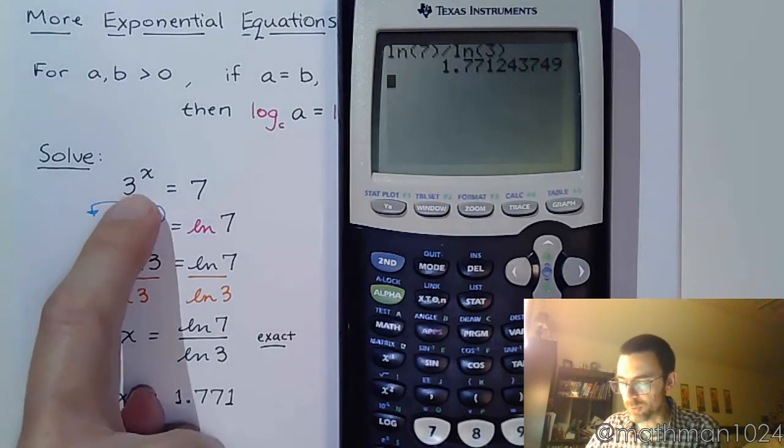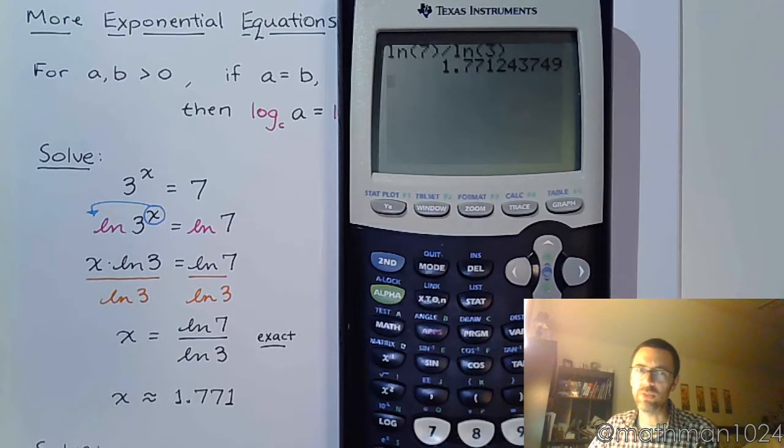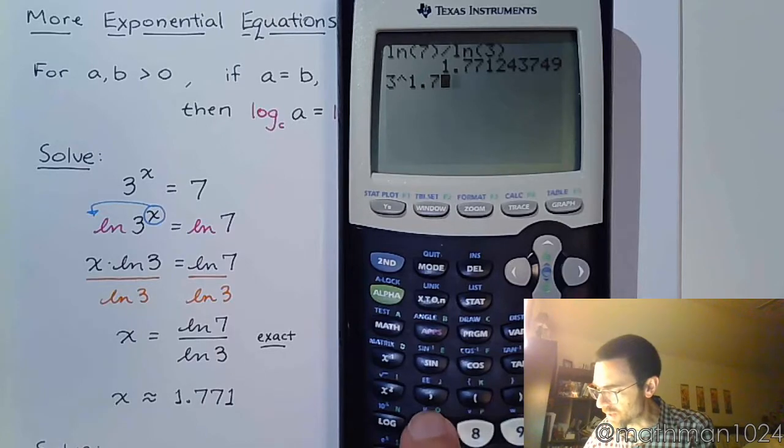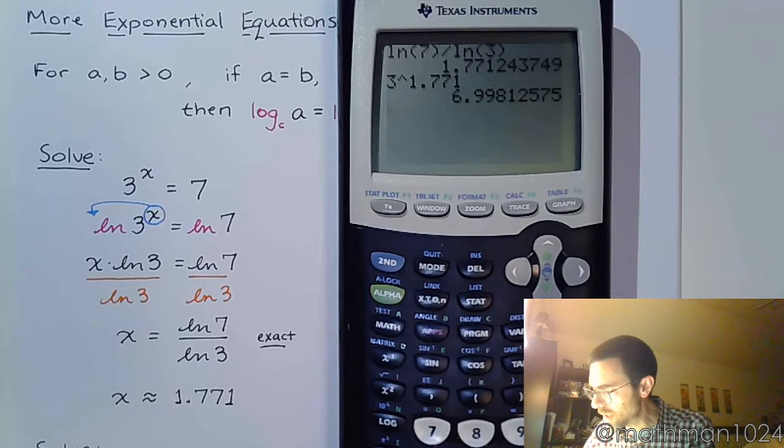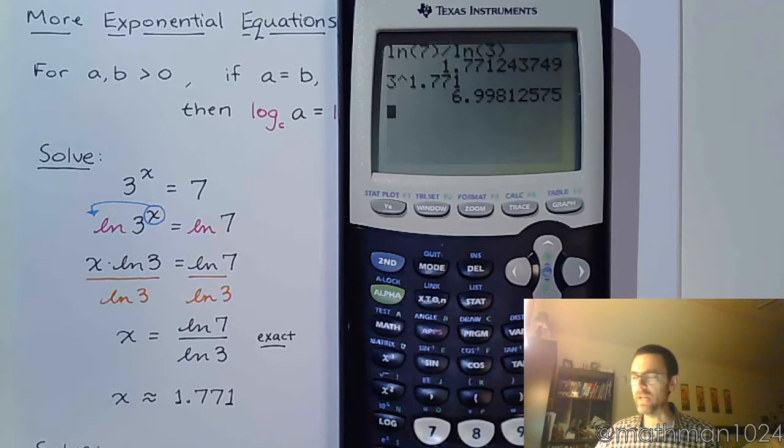So I'm saying that if I replace this x with 1.771, I'll get something that is going to be close to, but probably not exactly 7. So 3 raised to the 1.771. And yeah, I get a value that's very, very close to 7, so I know that I'm on the right track. I feel really good about my answer.